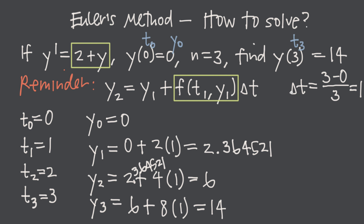For most basic Euler's method problems, delta t is constant — the step size is equal. But sometimes you'll be given an uneven step size or exact t values to use. In that case, your process is the same: map out the t values you're supposed to use, and to find y values always use the previous t and y. Whether the step size is equal or unequal, the Euler's method process is the same.